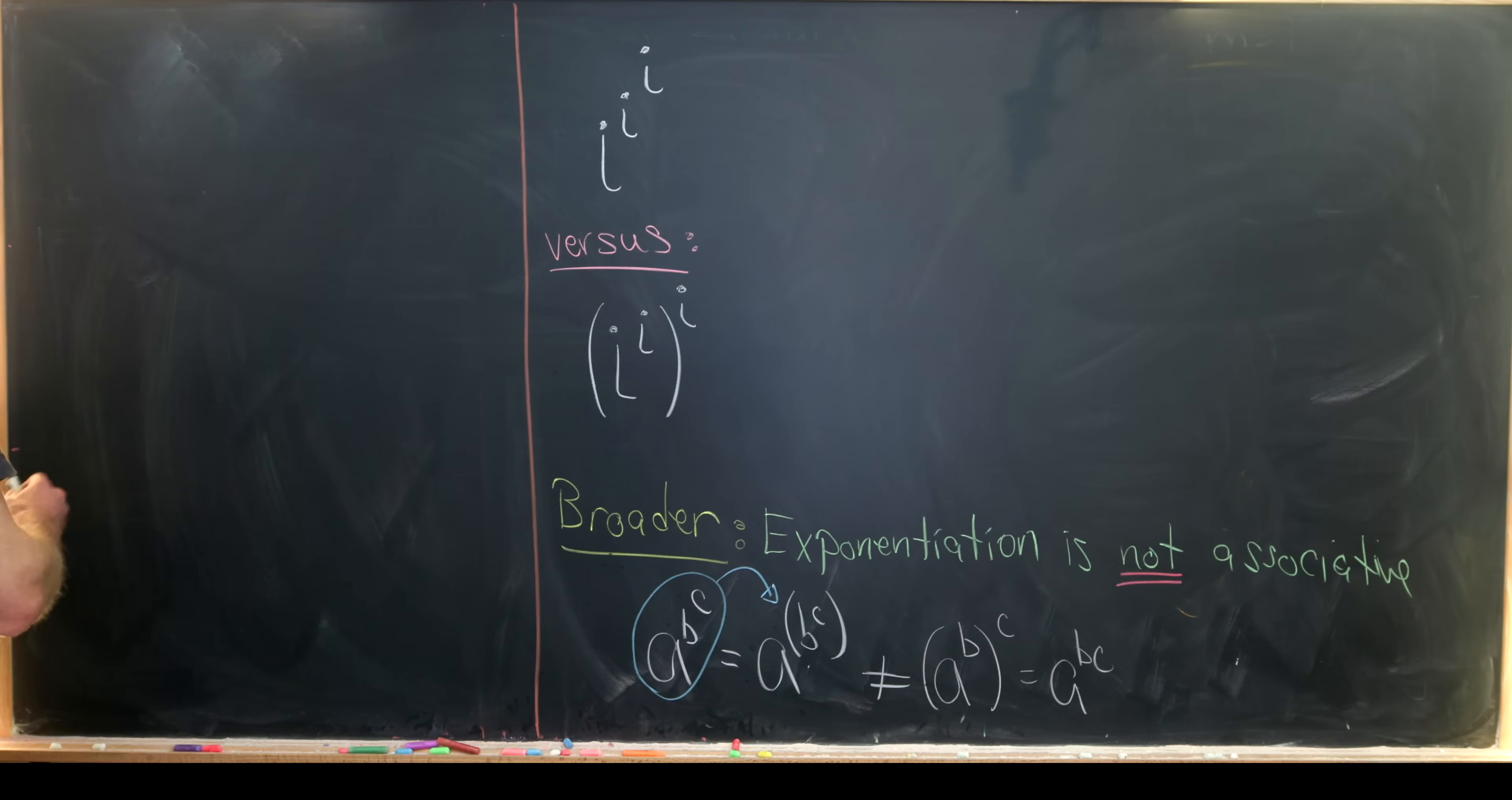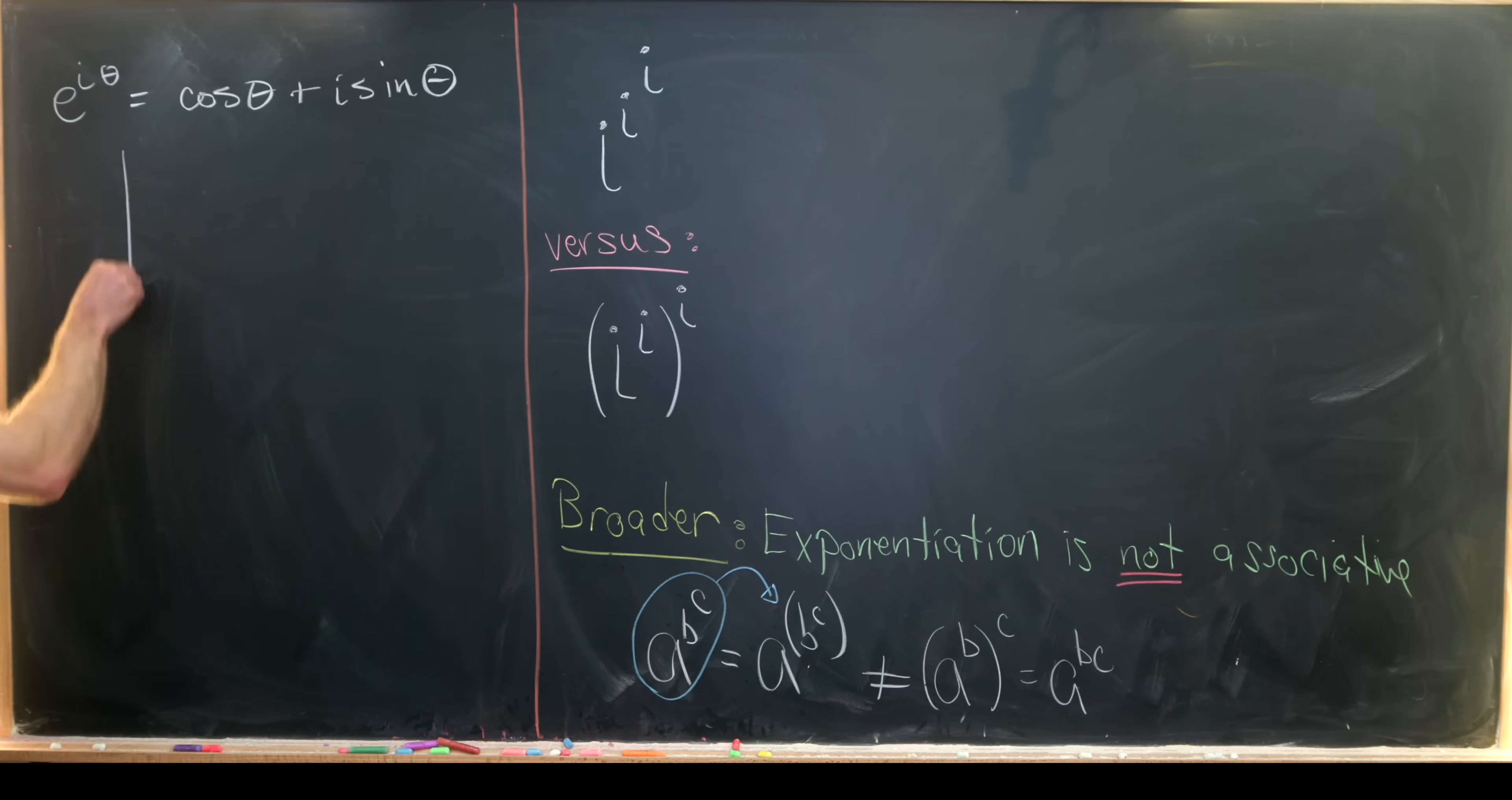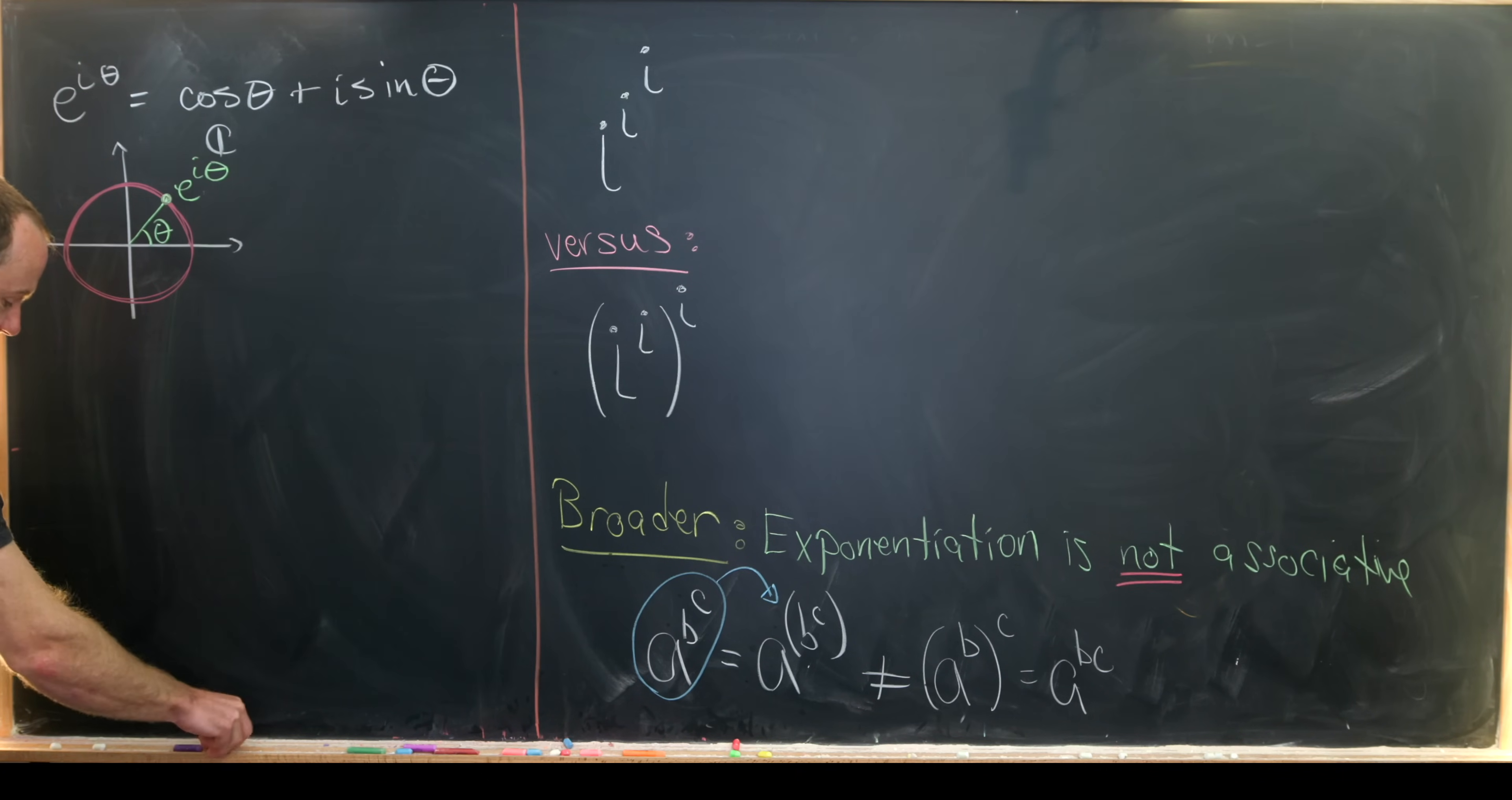But before we jump into our calculation here, let's just recall that if we have e to the i theta, we can think about that as cosine theta plus i sine theta. So this is our complex exponential written with Euler's formula. And what's really going on here is that allows us to take this complex plane and think about a complex number that has a modulus of one, so in other words it is one unit from the origin via its argument. So if this is an angle theta right here, this is the complex number e to the i theta, assuming that we've set this thing up so that this is a circle of radius one.